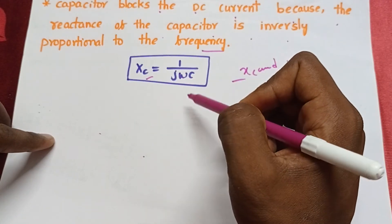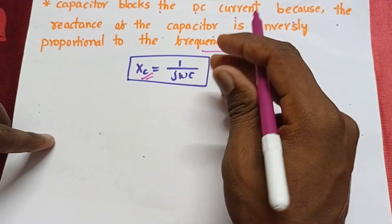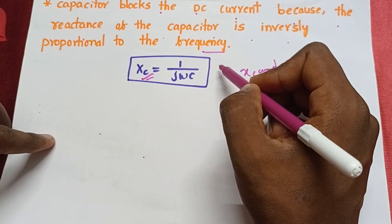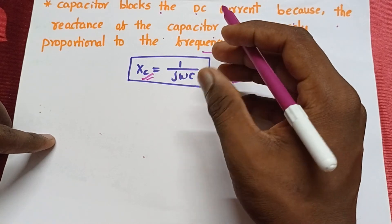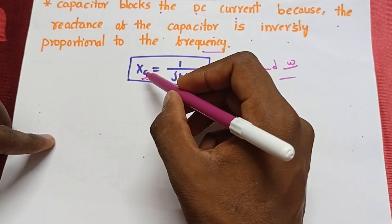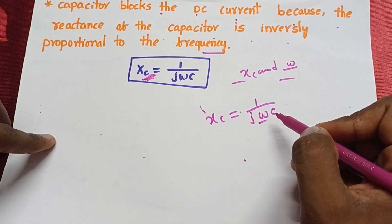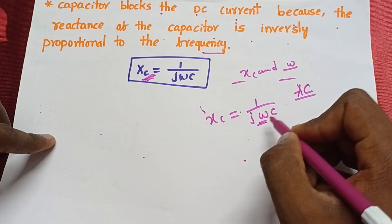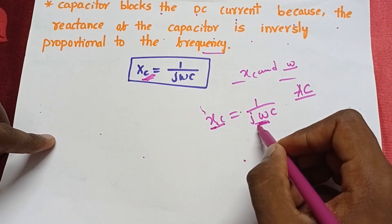The relation between the reactance and the frequency of the current is inversely proportional, which means if the frequency increases, then the reactance decreases. We get maximum frequency in alternating current only. So if we apply AC current to the capacitor, that AC current causes the reactance to decrease, and the capacitor allows the AC current to flow.